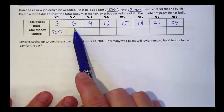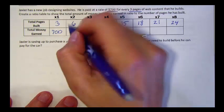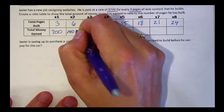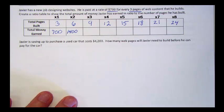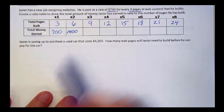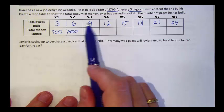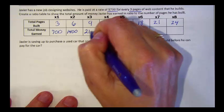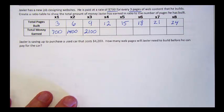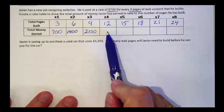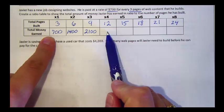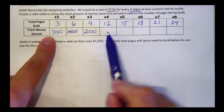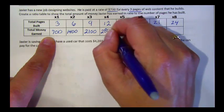If he builds six web pages, he's going to get paid $1,400, 2 times 700. If he builds nine web pages, he's going to be paid $2,100. If he builds 12 web pages, now we need to multiply 700 times 4 to get $2,800.